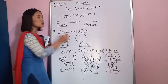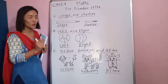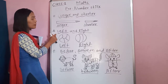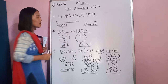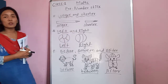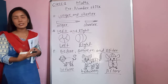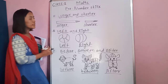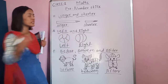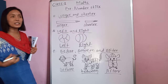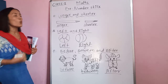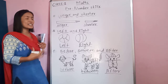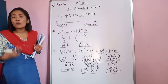The shorter one means 'choto'. After that, the second topic is left and right. In Nepali, left means 'baya' and right means 'daya'. Now, how do we identify whether any object is on the right or left?